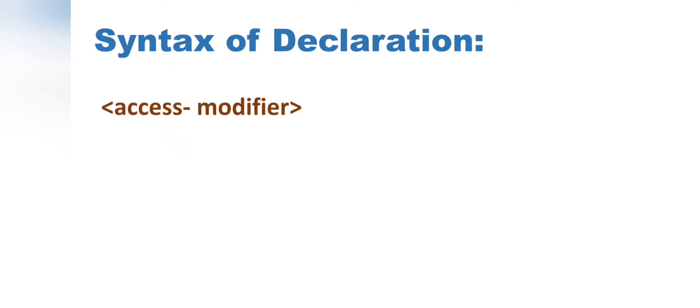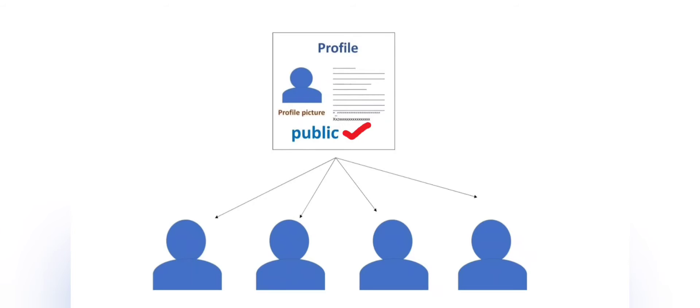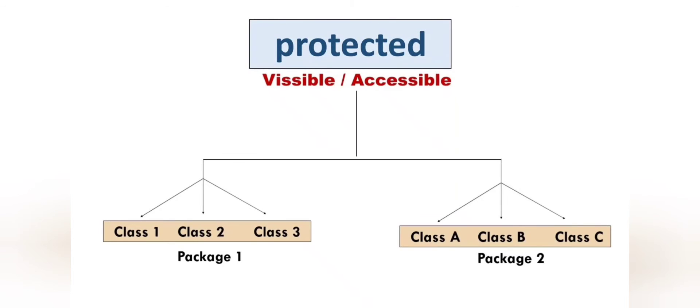To declare a variable, we use the following syntax. First we write the access modifier, also called the access specifier, which controls the access level or scope of the variable in the program. There are four types of access modifiers: public, private, protected, and default. For example, if I set my social media profile as public, everyone can see it. Similarly, if we declare a variable as public, it is accessible to all classes in our program.